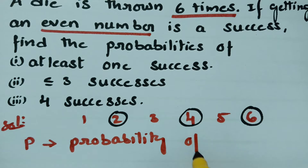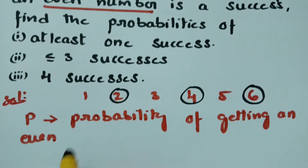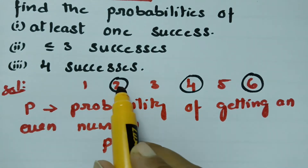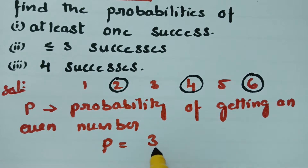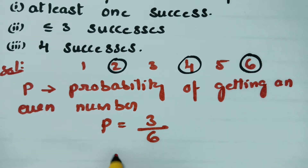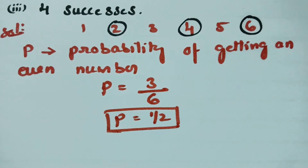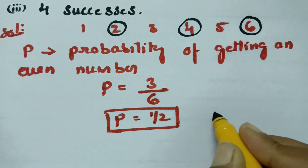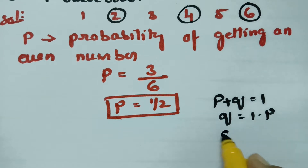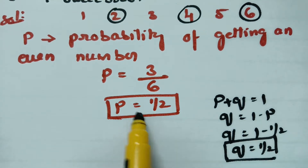The probability of getting an even number: there are 3 even numbers out of 6, so if we cancel, the P value will be half. P is equal to 1/2. Since P + Q = 1, Q = 1 − P = 1 − 1/2, so Q is also equal to 1/2. We now have both P and Q values.